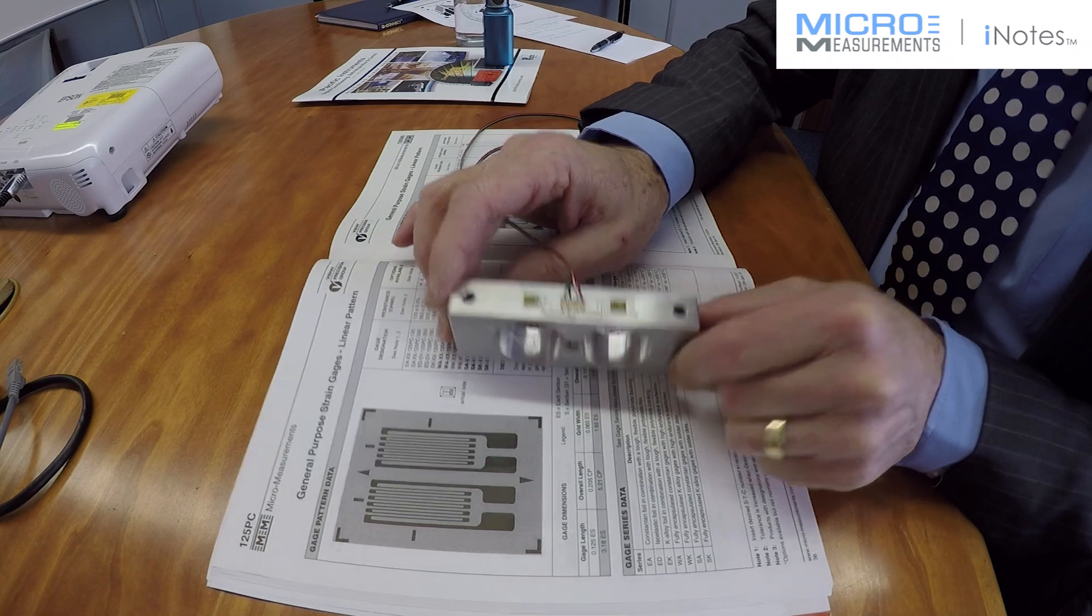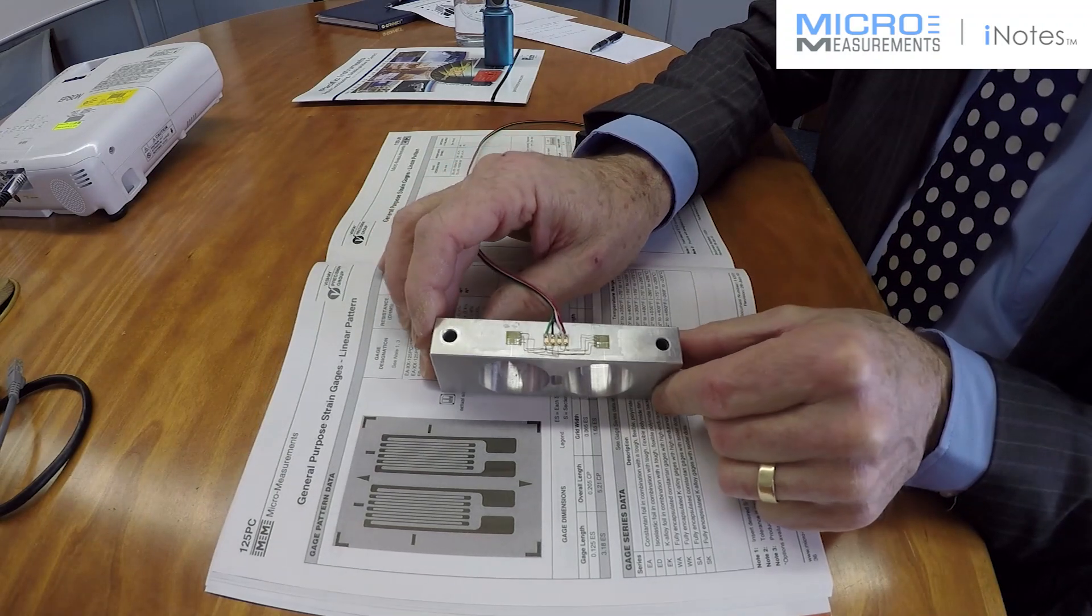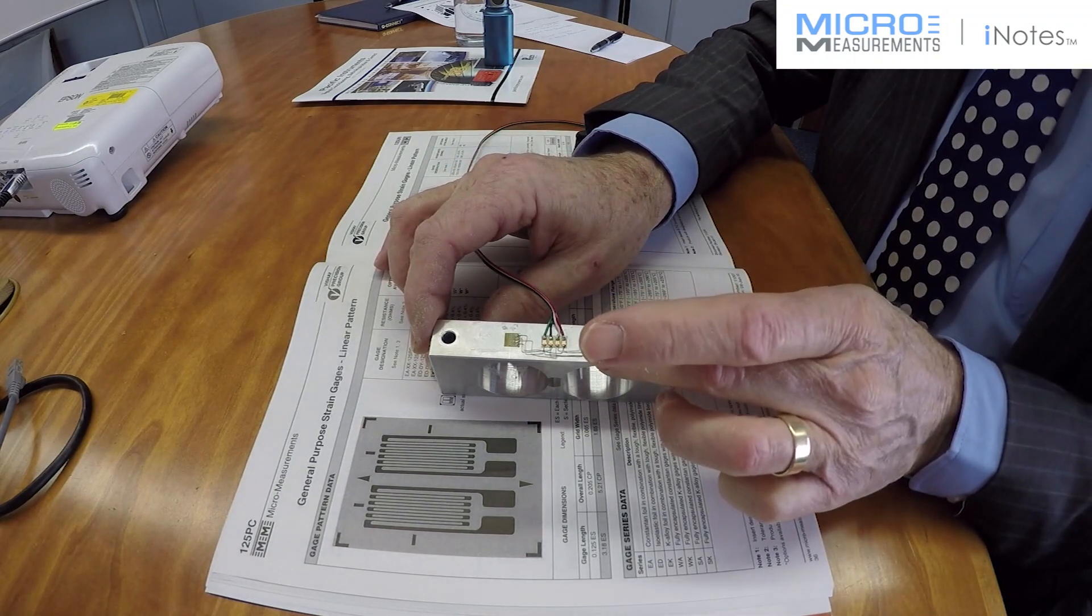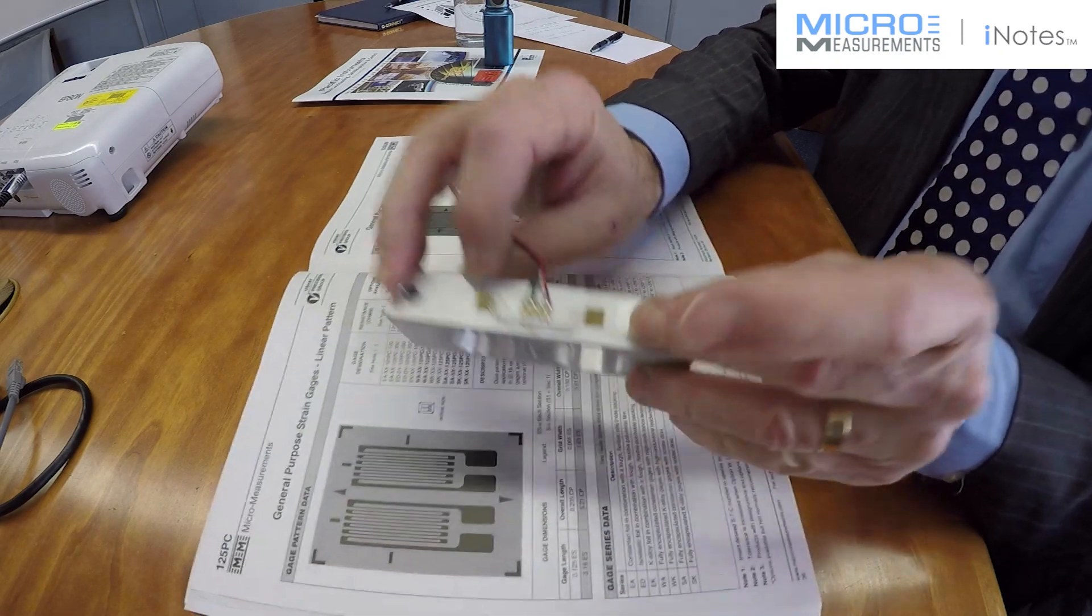This is a binocular cell made of aluminum and what we are asking the students to do is to put a double linear gauge at one point and another double linear at another point.